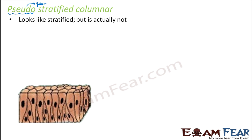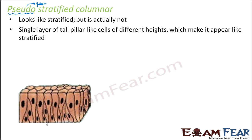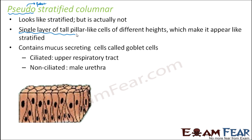In this picture you can see that the nucleus and the height of the cells are different — one is tall, the next is short, and others vary in height. Since you have cells of different heights, it gives the look of many different layers. That is why it is called pseudo stratified. It actually consists of a single layer of tall pillar-like cells — basically simple columnar — but because of the different sizes of cells it gives the appearance of stratified.